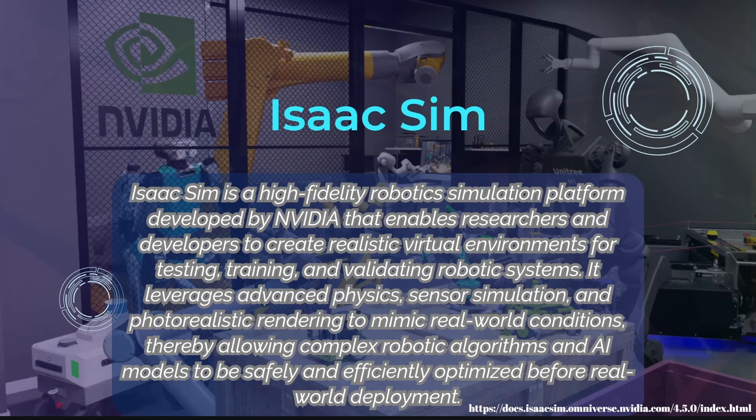IsaacSim is developed by NVIDIA, which allows researchers to do really realistic simulations. The differences compared to other simulators include better image and video quality and improved rendering properties. Its physical representation is also better than other simulations. Many companies like Unitree, Boston Dynamics, and others have added predefined robot assets to IsaacSim, so you can try many different robots without designing them from scratch.